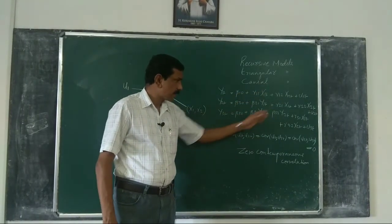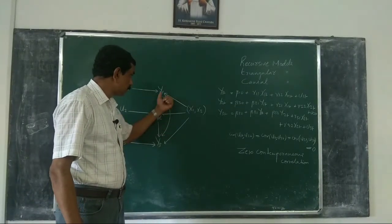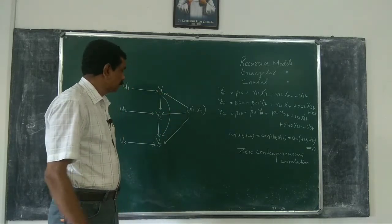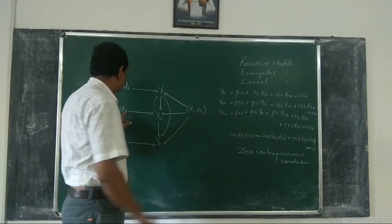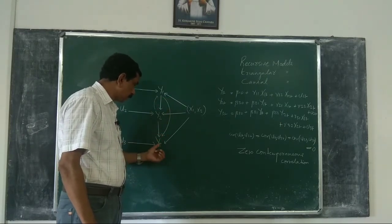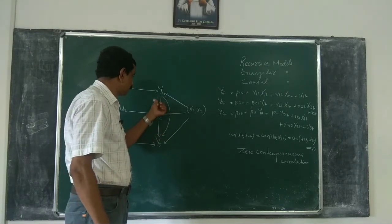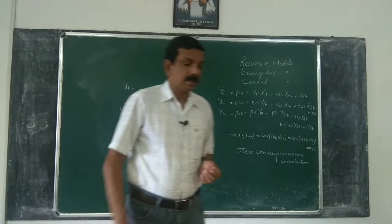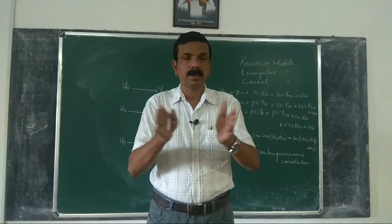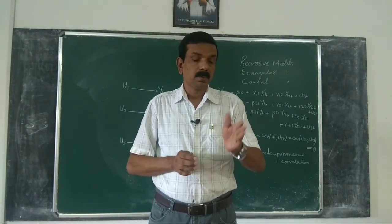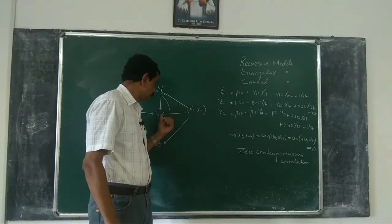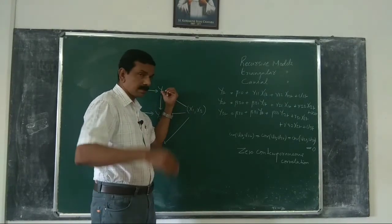As you can see, Y2 is determined by Y1, but Y1 is not determined by Y2. If there were a relation in the other direction too, then U2 and Y1 would be correlated. Similarly, Y3 is determined by Y2 and Y1, but Y3 in turn does not determine Y2 or Y1. So there is only a one-way relationship between variables — unilateral causal dependence. That is, Y1 affects Y2, but Y2 will not affect Y1.